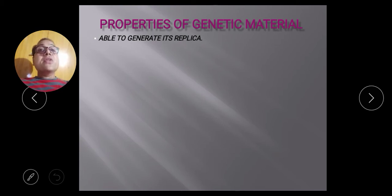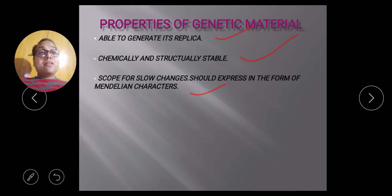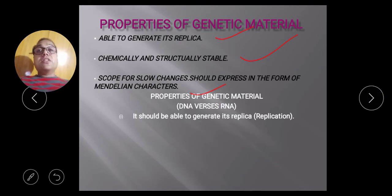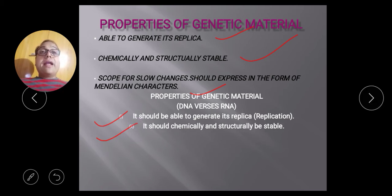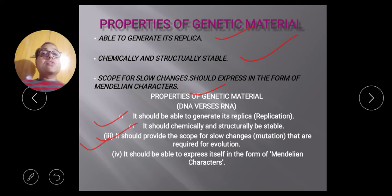The properties of a good genetic material are: it should be able to replicate, it should be chemically stable, it should allow for slow changes so that mutation is possible but at a low rate, it should be expressible in the form of Mendelian characters, and it should be transferable from one generation to the next. DNA fulfills all these properties — it can generate its replica through replication, it is chemically and structurally stable, and it provides scope for slow change through mutation, allowing evolution.